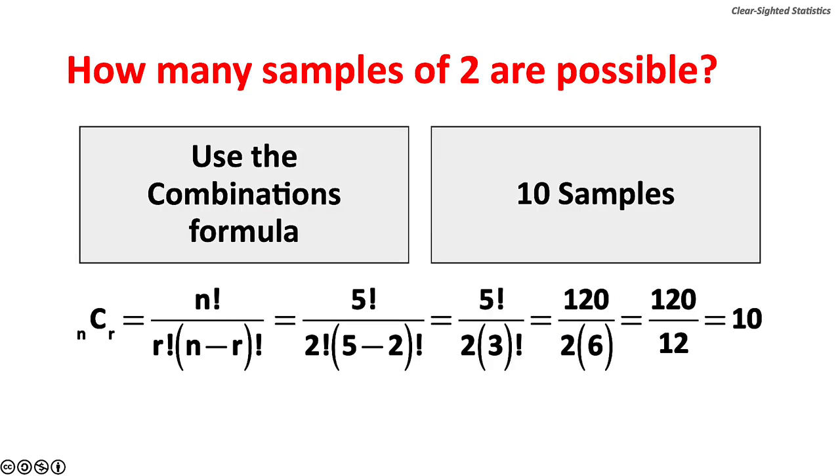How many samples of two players are possible from the five players? We can use the combinations formula to figure out the number of samples. As shown in the formula, there are ten possible samples.